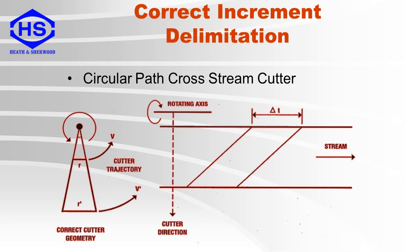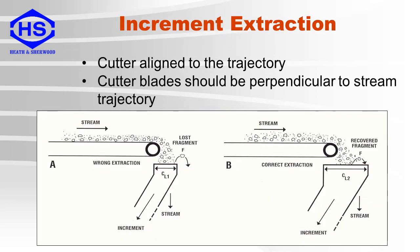For proper increment extraction, the cutter blades need to be aligned to the stream trajectory — they should be perpendicular to the stream trajectory. They also need to be long enough so that deflected particles, which should be included in the increment, are not lost.